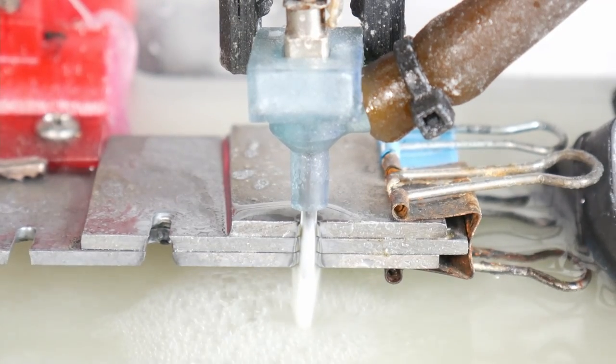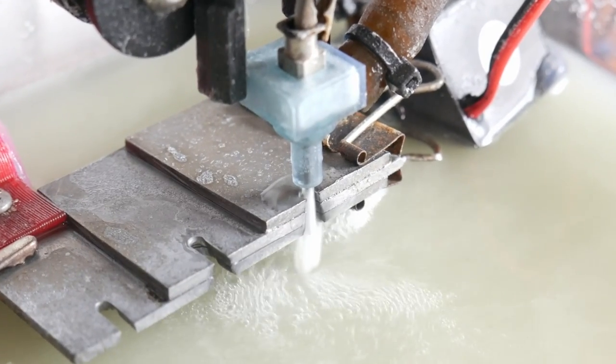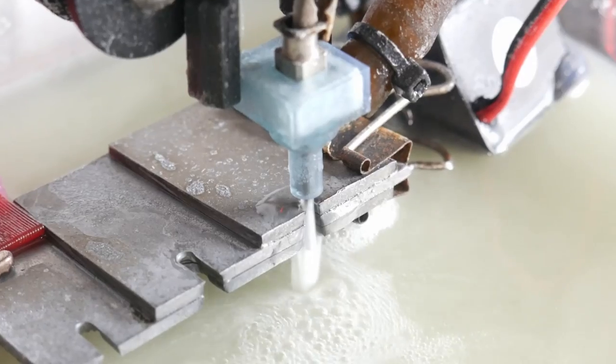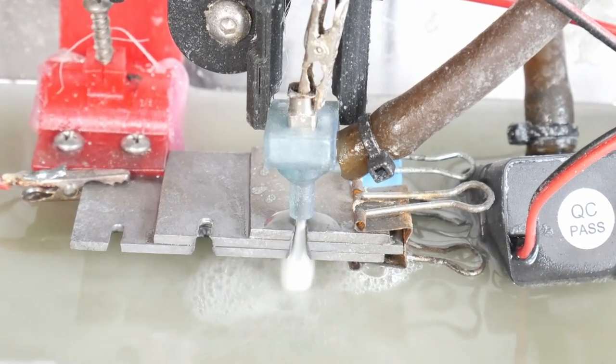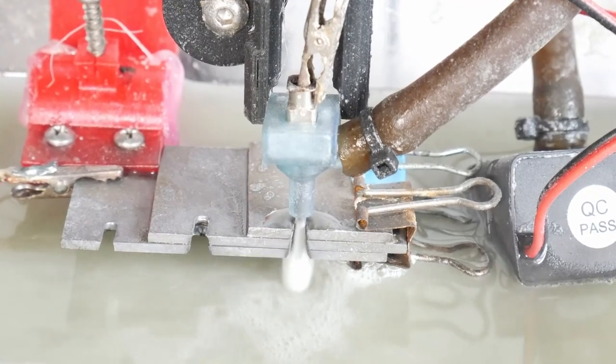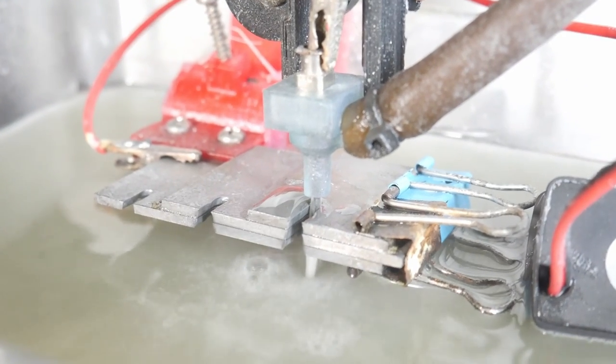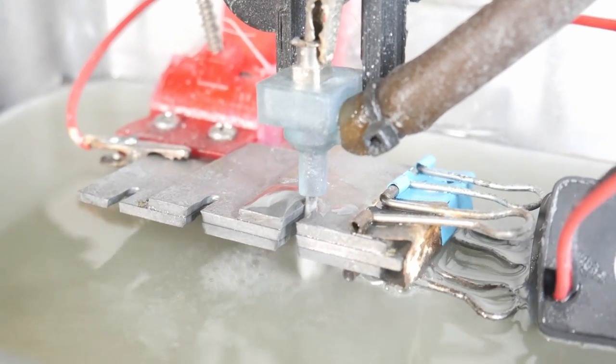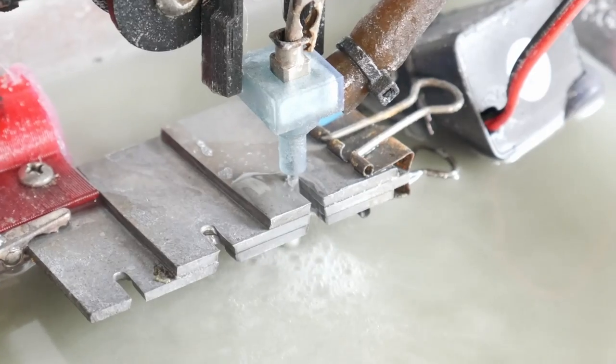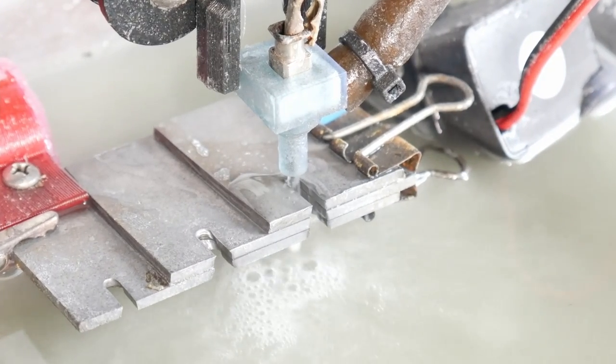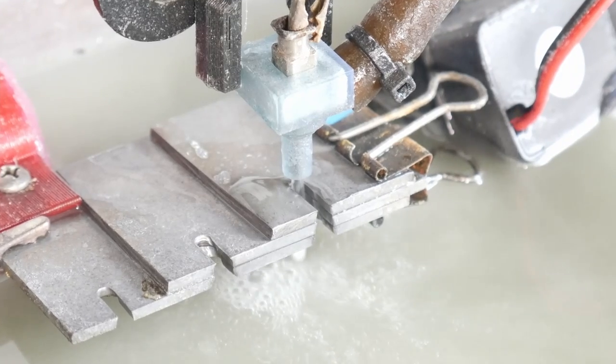This is 4130 impact resistant chromoly steel being cut on a lightly modified 3D printer. To the best of my knowledge, no one has ever done something like this before. We're honestly approaching the capabilities of machines many magnitudes more expensive. And yet, here it is, right next to my PC, just silently chugging away. That's pretty amazing.